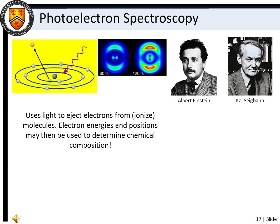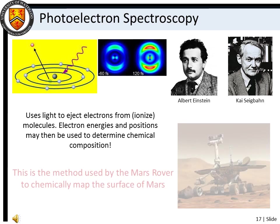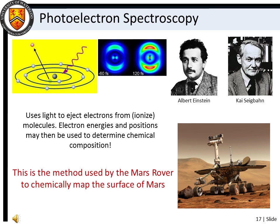When an electron in an atom or molecule is given enough energy, the electron is ejected and the atom or molecule is said to be ionized. You might consider the process of ionization to be the limit of electronic excitation. Using light to accomplish this is known as photoionization. Owing to the quantized nature of energy levels, ejected photoelectrons may only have very specific kinetic energies that are characteristic for each different atom or molecule. The Mars rover takes advantage of this phenomenon to chemically map the surface of Mars, with an instrument designed and built at the University of Guelph.